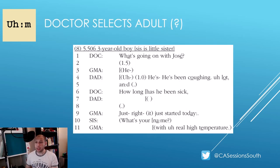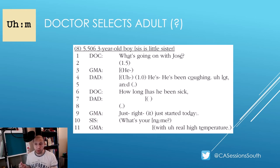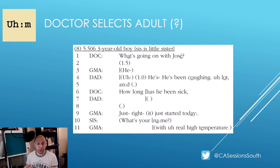First, we're going to take a look at an example where the doctor appears to select the adults to present the problem. However, I'd like you to consider an alternative reading for this turn design, considering it is in the context of paediatric primary care. What is noteworthy is that both adults initiate their turns only after a substantial gap of one and a half seconds. Upon this collision of turns, both adults drop out, only for one of them to continue one second later. This excerpt shows an interactive negotiation between the adults relating to who has primary rights to present the problem to the doctor.